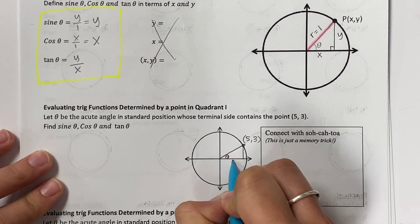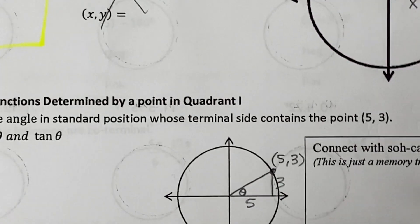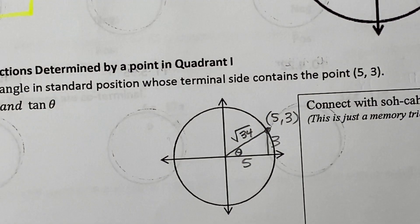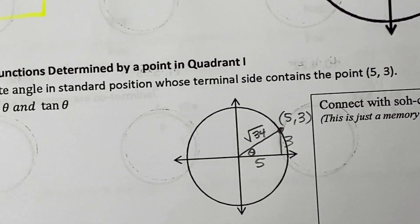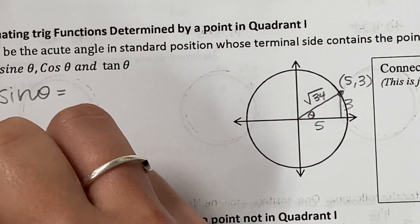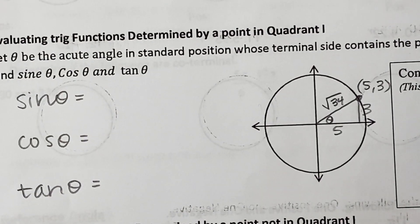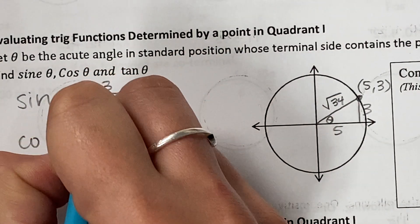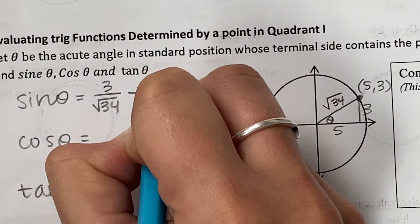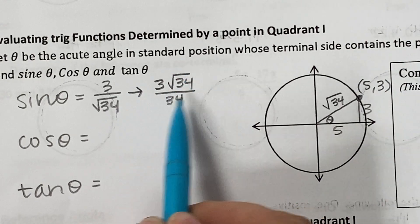Theta is always by the origin. So right 5, up 3. If I need the hypotenuse, I can just do the Pythagorean theorem: 5 squared plus 3 squared is 34, and the square root of 34 cannot be simplified, so we'll leave it as root 34. For sine of theta — opposite over hypotenuse — that's 3 over root 34. We've got to rationalize the denominator, so multiply the top and the bottom by root 34. That gives us 3 root 34 over 34, which cannot be simplified, so that's the answer.